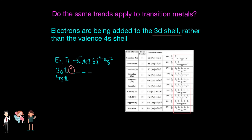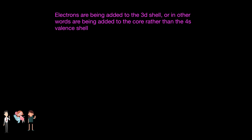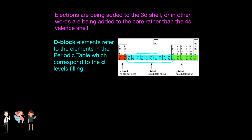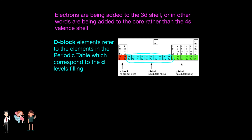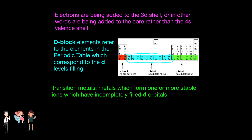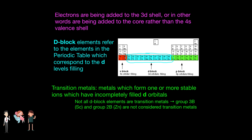Ellen Lee, the chemistry fairy, I need you again. As you've already recognized, in terms of transition metals, electrons are being added to the 3d shell — in other words, being added to the core — rather than the 4s valence shell. Before we proceed, let's first define d-block elements and transition metals, because although those terms are used interchangeably at times, they have slightly different definitions. d-block elements refer to the elements in the periodic table which correspond to the d-levels filling. Transition metals are metals which form one or more stable ions with unfilled d-orbitals. So not all d-block elements are transition metals. For example, group 3B like scandium and group 2B like zinc are not considered transition metals. Now let's get back to explaining the trends.